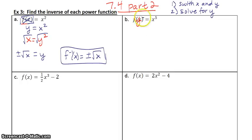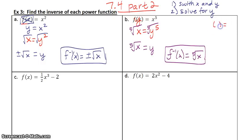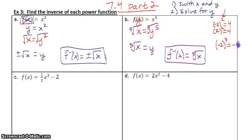For part B: y equals x to the 5th. Step 1, switch x and y. Step 2, solve for y — to get rid of a 5th power, take the 5th root. When you take an odd root, you do NOT need the plus or minus. When you take an even root, you do. So this one is just the 5th root of x. The reason you need two answers for even roots is because two different inputs can produce the same output when squared, but with odd powers, changing positive to negative gives a different number entirely.